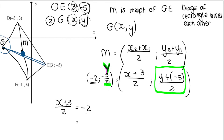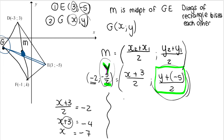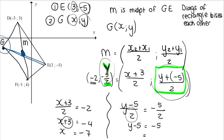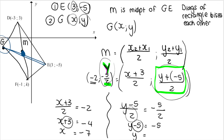All I need to do is set each part of the midpoint formula equal to its known value. So: (X + 3)/2 = −2. Multiply both sides by 2: X + 3 = −4, so X = −4 − 3 = −7. Then for Y: (Y + (−5))/2 = −5/2. Multiply both sides by 2: Y − 5 = −5, so Y = −5 + 5 = 0. Therefore coordinate G is (−7, 0).